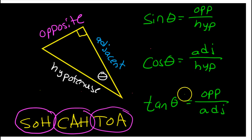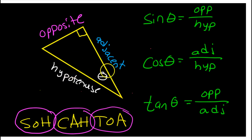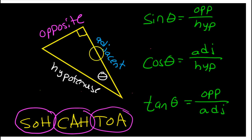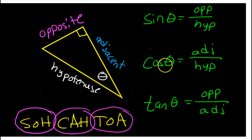Know these definitions. If you are looking at an angle in a right triangle, the hypotenuse is across from the 90-degree angle. Across from the angle you're looking at is called the opposite leg. Right next to the angle you're looking at is called the adjacent leg. Armed with those words, you can define sine, cosine, and tangent of the angle. Sine of the angle will be the opposite leg over the hypotenuse. Cosine is adjacent over hypotenuse. And tangent is opposite over adjacent.